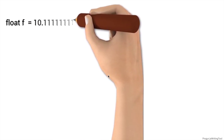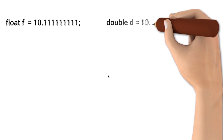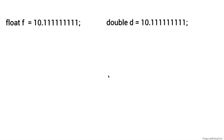Let's declare a variable using the float data type: float f = 10.1111111111 (nine ones). We can also declare a double variable like this: double d = 10.1111111111 (nine ones). We're taking the same value and trying to store it with float and with double. The double d assignment is absolutely valid, but what about the float?